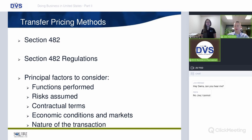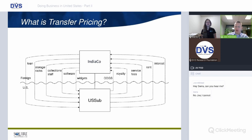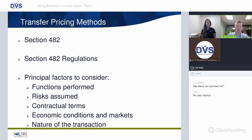The governing code section for US transfer pricing is Section 482 and its regulations. The factors considered include: functions performed by each party, risks borne by each party (market risk, collection risk, interest rate risk), contractual terms, economic conditions in both markets, and the nature of the transaction. Assets employed — such as valuable intellectual property or capital-intensive assets — are also a critical factor, as Jugal correctly noted.